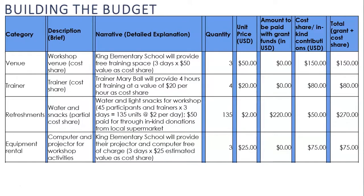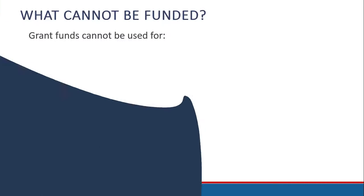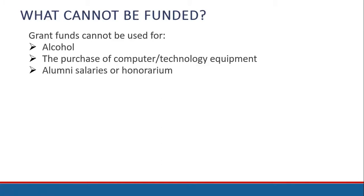The elementary school will also provide use of their projector and computer for the three days of my workshop, giving me another $75 in cost share. Finally, I have added the bank transfer fee to get funds from my local program office to my bank account. There are items that grant funds may not be used for, including alcohol, the purchase of computer or technology equipment, and alumni salaries or honoraria — this includes alumni who are not on the project team. Essentially, if someone is an alum, they may not be paid under any circumstances.